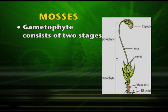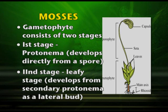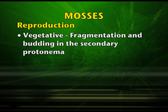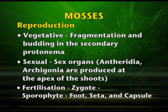In mosses, the gametophyte consists of two stages. The first stage is a protonema which develops directly from the spore. The second stage is the leafy stage which develops from secondary protonema as a lateral bud. Reproduction may be by vegetative means, generally by fragmentation and budding. In sexual reproduction, antheridia are the male sex organ and archegonia are the female sex organ, produced at the apex of the shoots. After fertilization, the zygote develops into the sporophyte, which forms foot, seta, and capsule.